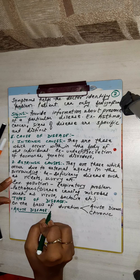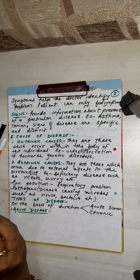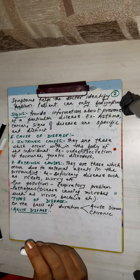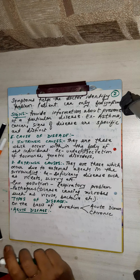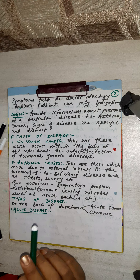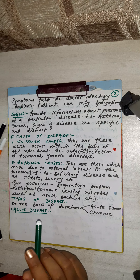Acute disease is actually a short duration of time. For example, common cold — its course is of short duration and then you will be fine. Diarrhea, typhoid — all are of short duration.